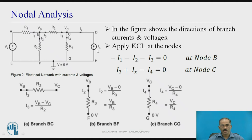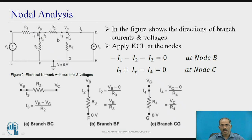The figure shows the direction of branch currents and node voltages. Node voltages are VB and VC. Branch currents are I1, I2, I3, I4, and Ix due to the current source. Applying KCL at the nodes, all outgoing currents are considered negative. At node B: I1, I2, and I3 are all going out, so minus I1 minus I2 minus I3 equals 0. At node C: I3 is incoming, I4 is outgoing, and Ix is incoming, so I3 plus Ix minus I4 equals 0.